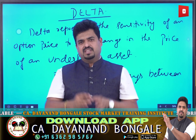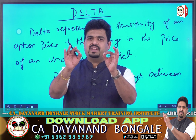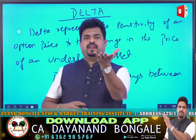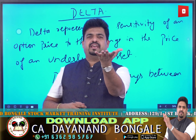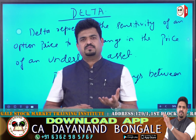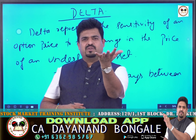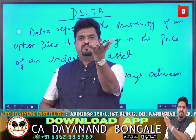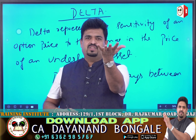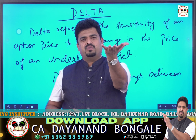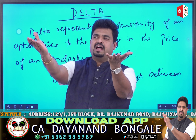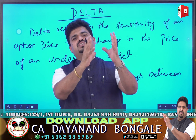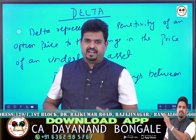The price variable is Delta. Delta is a very simple concept. It represents the sensitivity of the option premium to changes in the underlying asset price. For example, Nifty at 17,500 has a certain premium; when it moves to 17,600, that change in premium is Delta.